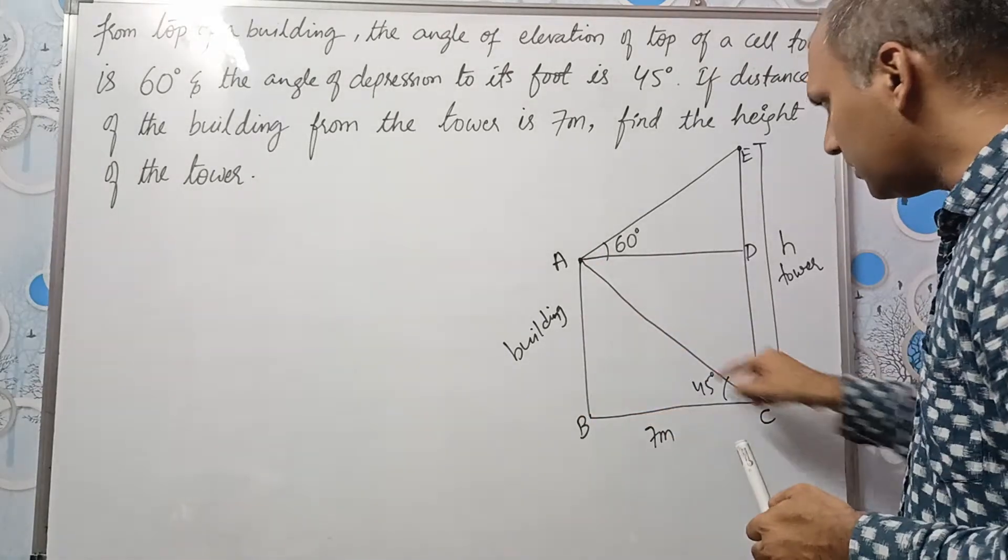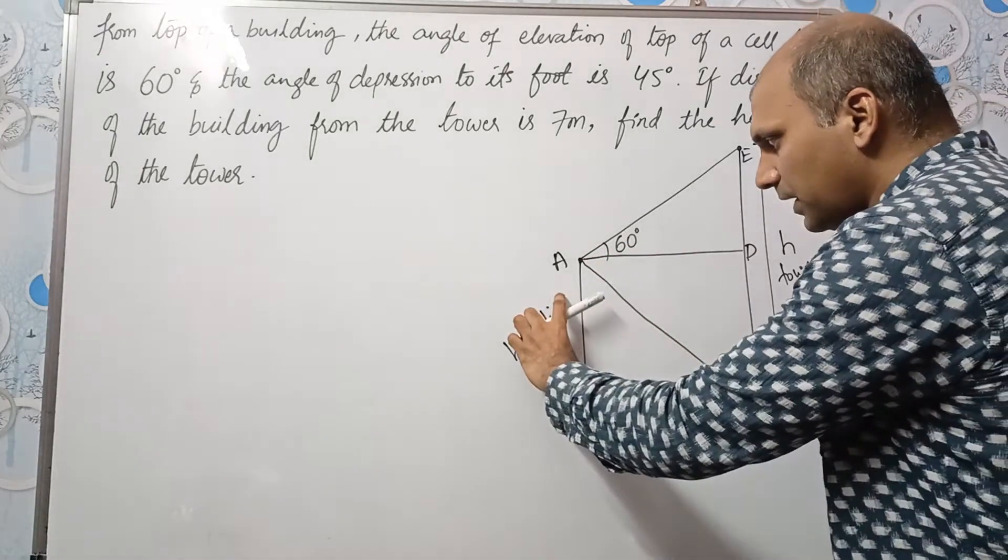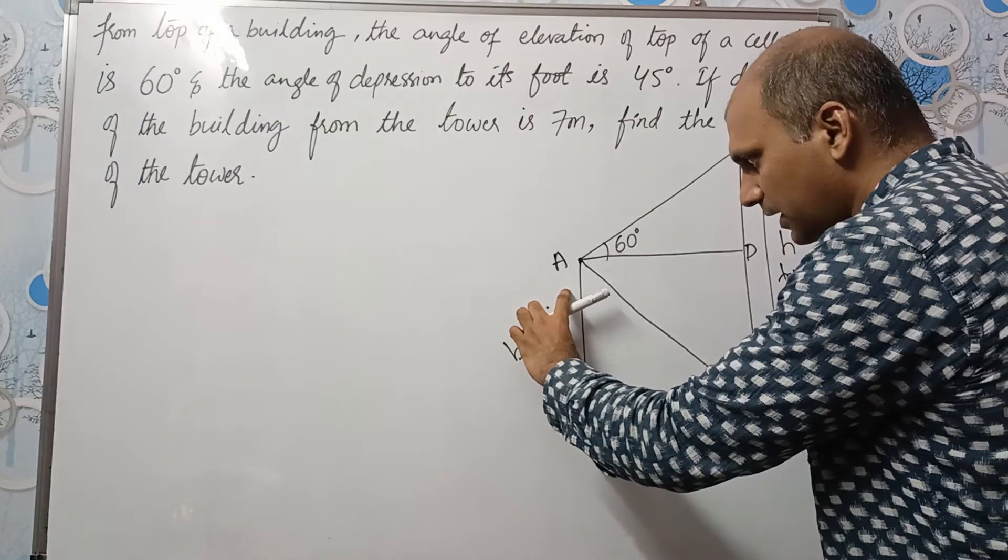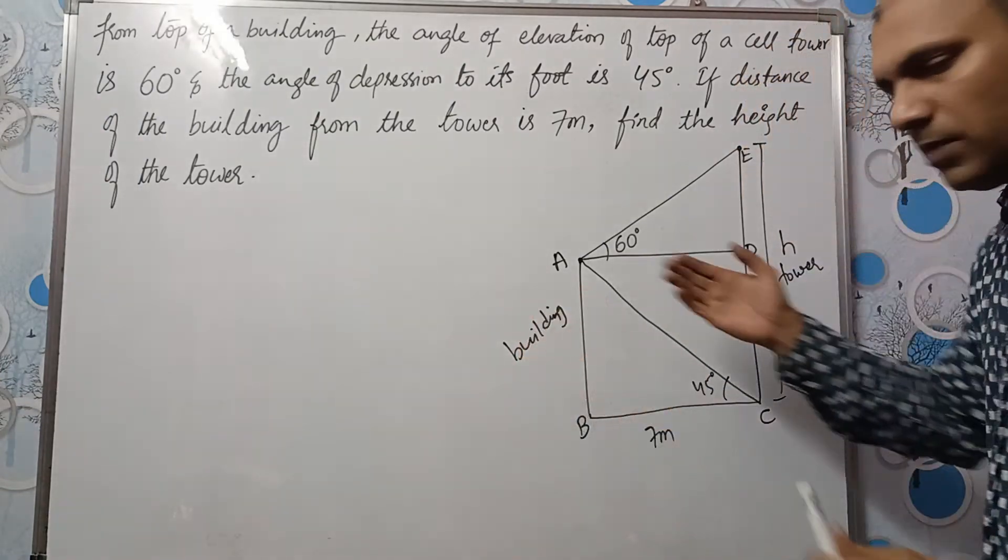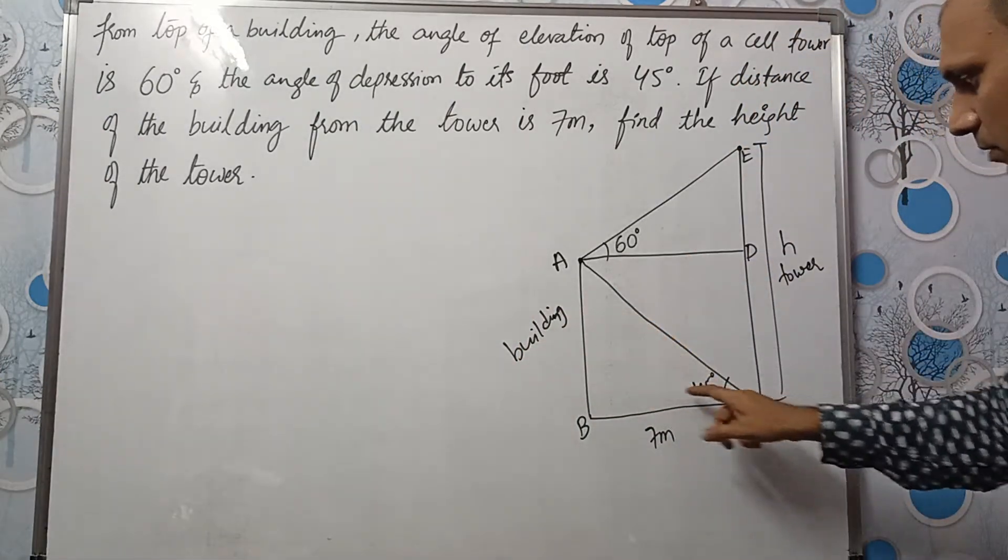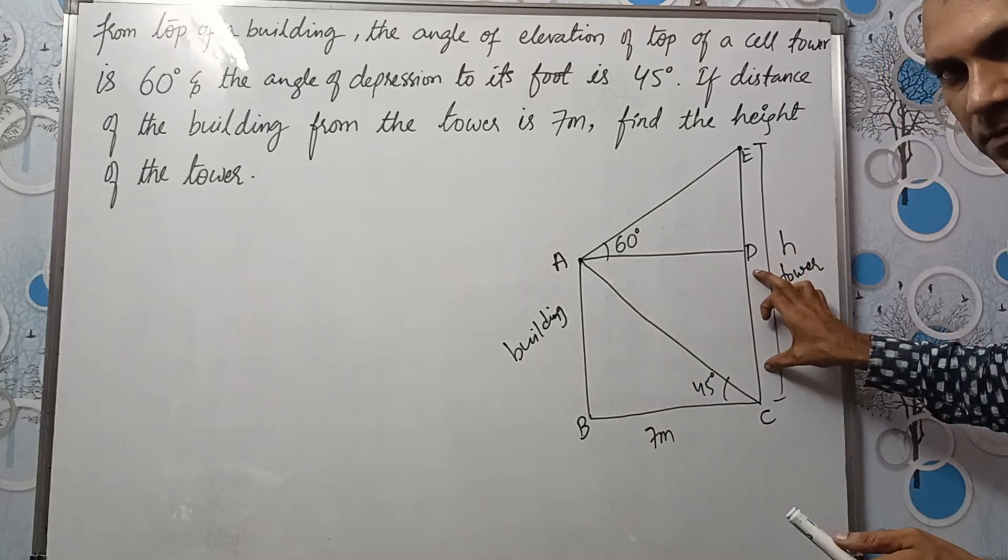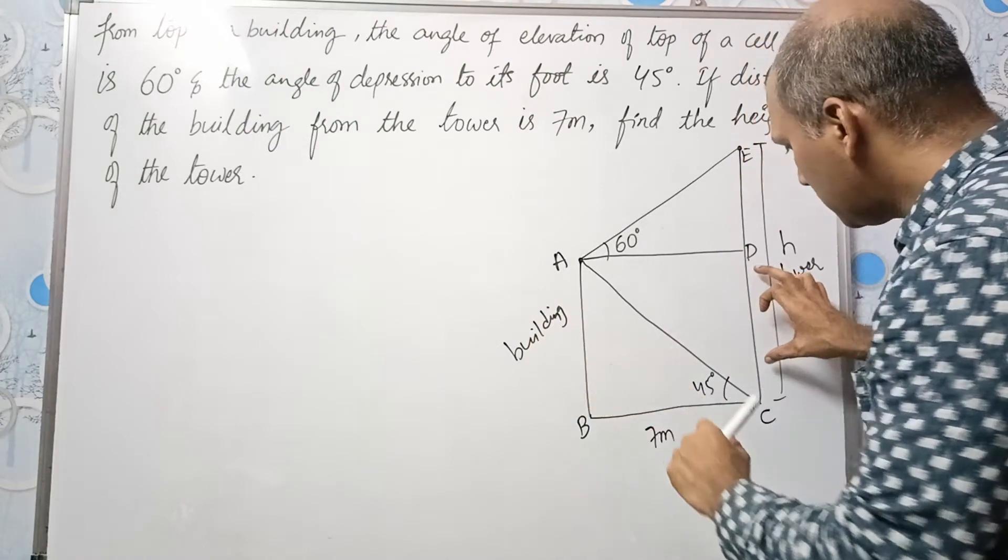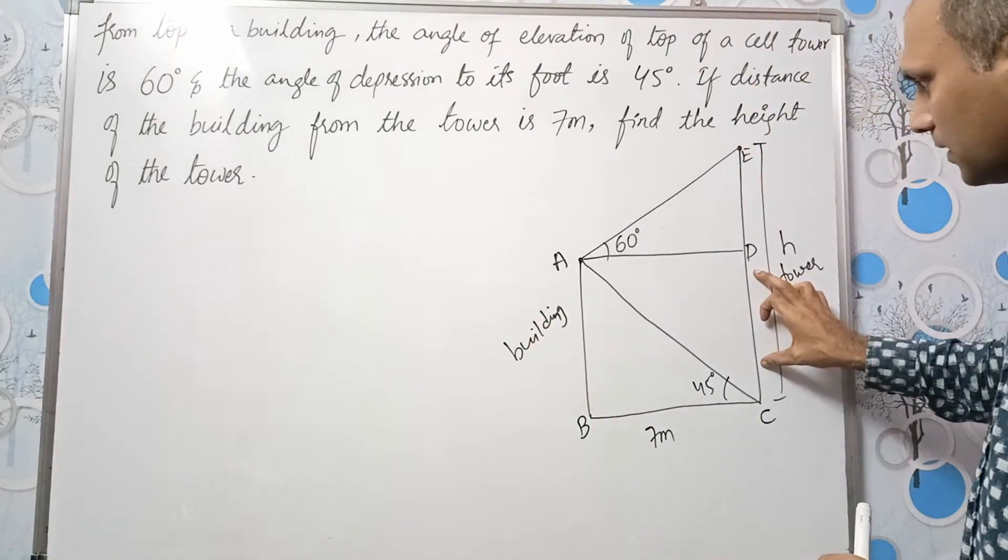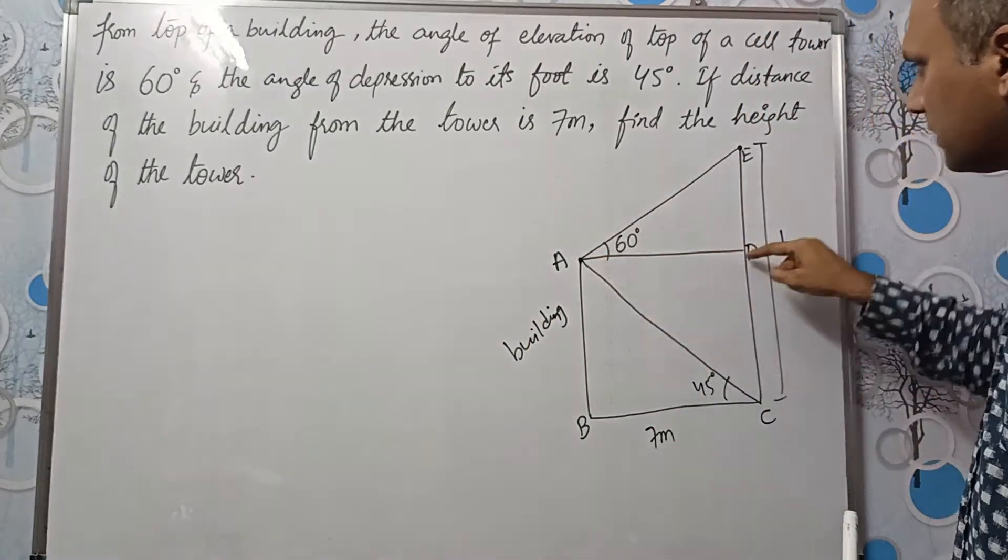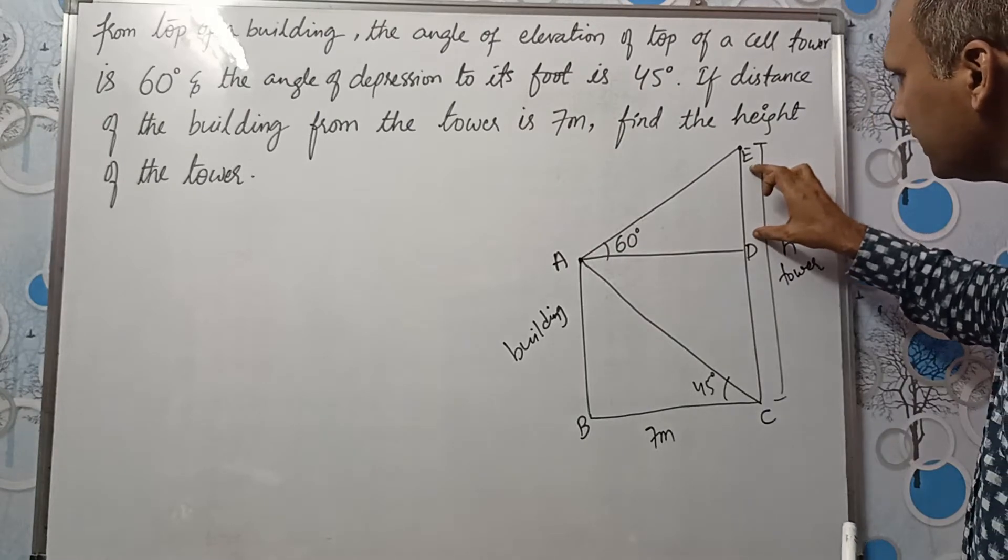We will take this triangle ABC and find the height of the building. If you can find the height of the building, height of the building will be 7. Because we have 45 here. So this DC will be 7. We'll find how we get 7. See? DC will be 7.